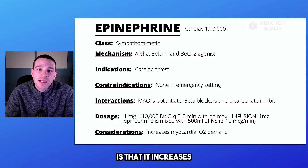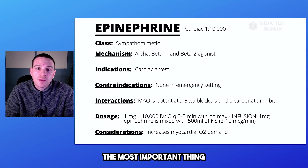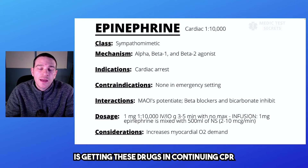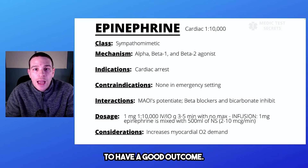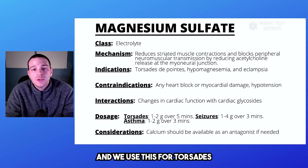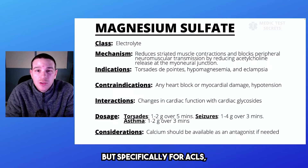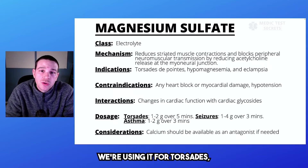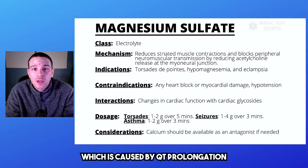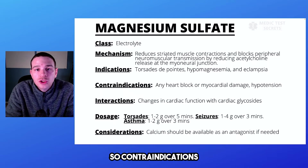One thing to consider with epinephrine is that it increases myocardial oxygen demand. But with cardiac arrest patients, the most important thing is getting these drugs in, continuing CPR, and doing our best to have a good outcome. Next, we have magnesium sulfate, which is an electrolyte. We use this for torsades, which is caused by QT prolongation due to an electrolyte imbalance of potassium and magnesium.